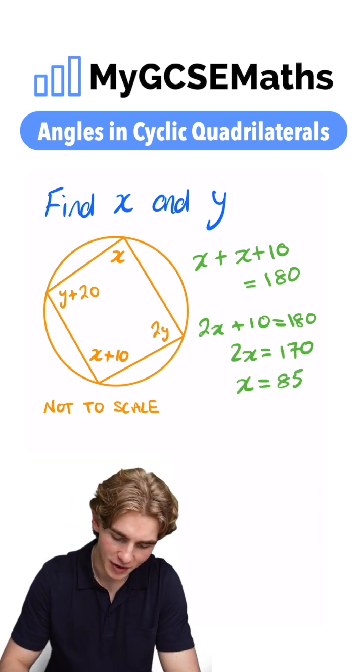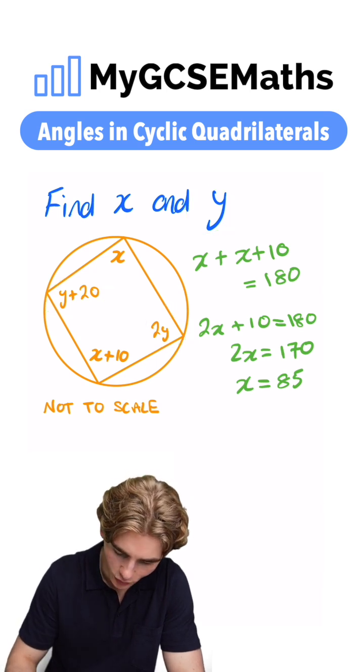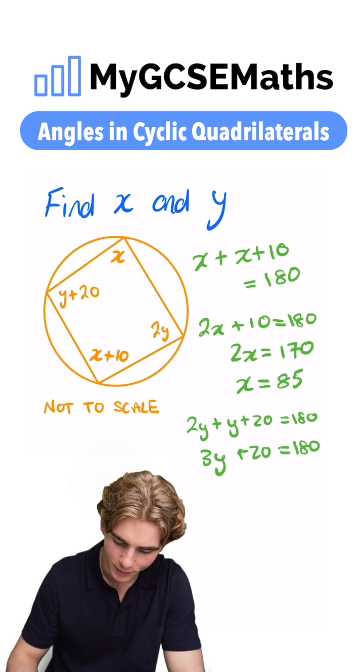We can do a very similar thing for y. We can say that 2y plus y plus 20 is 180. So we have 2y plus y plus 20 equals 180. We're going to collect our like terms. 3y plus 20 equals 180. Take 20 from both sides. 3y equals 160.